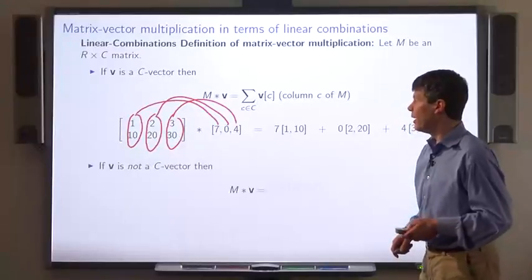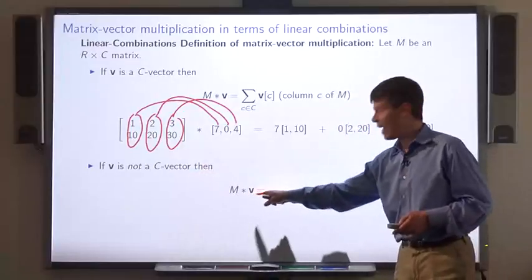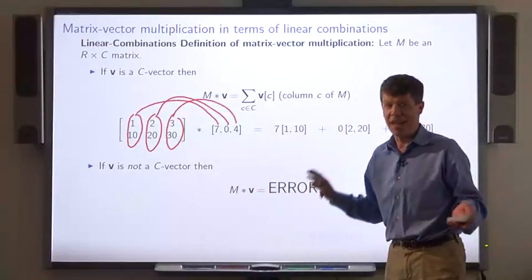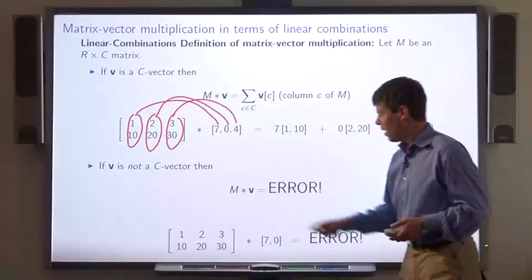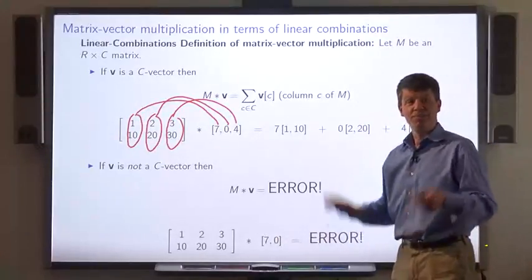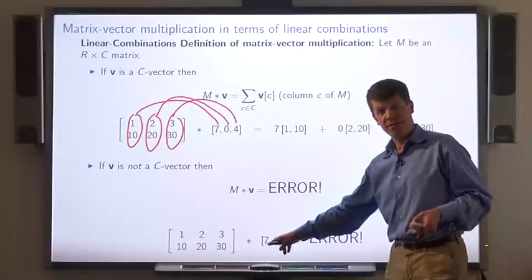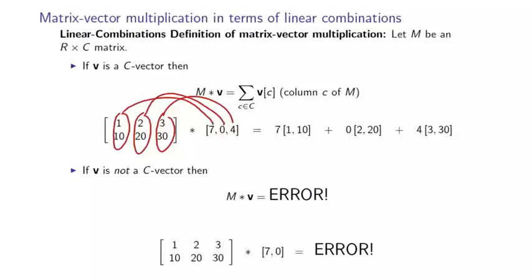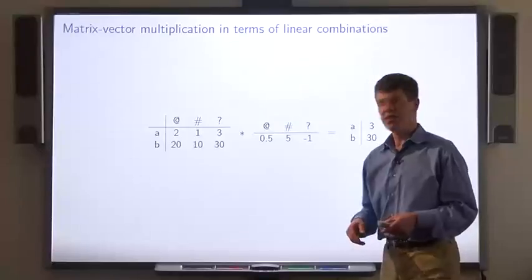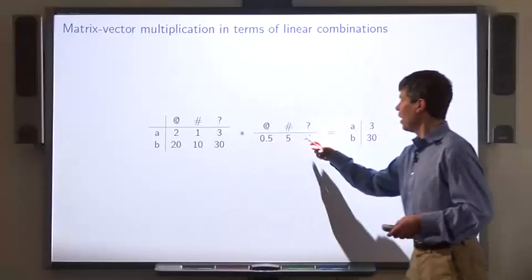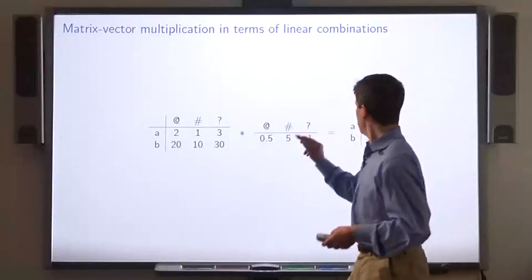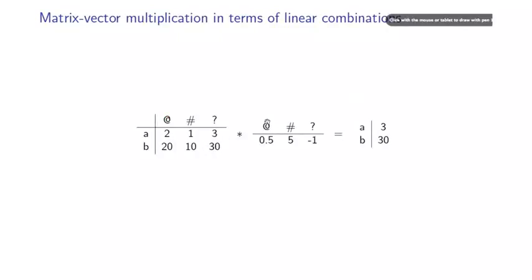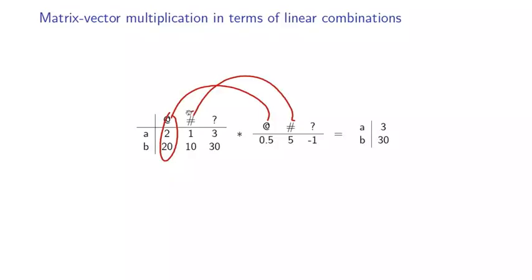On the other hand, if V is not a C vector, then the product M times V is not even allowed. For example, this matrix-vector product is an error because the number of entries in the vector isn't the same as the number of columns in the matrix. Here's another example: the product of this matrix by this vector is obtained by taking each entry of the vector and multiplying it by the corresponding column of the matrix. And here's the result.